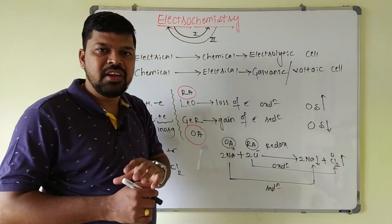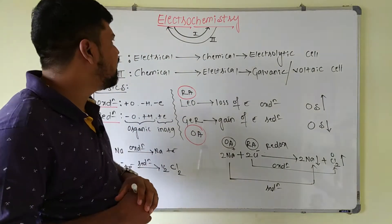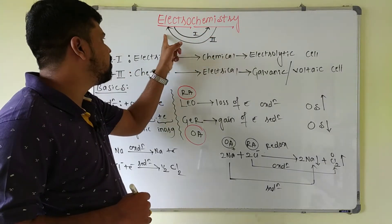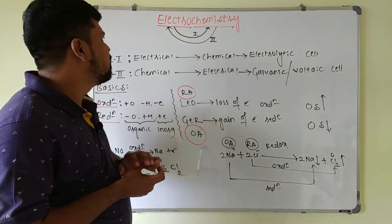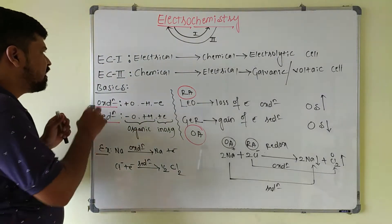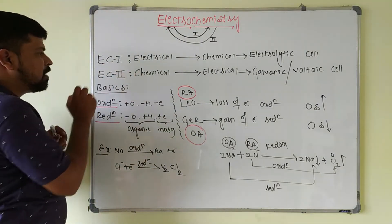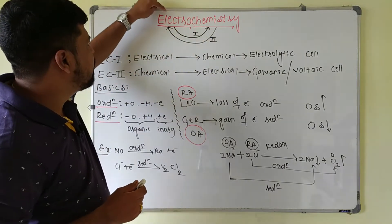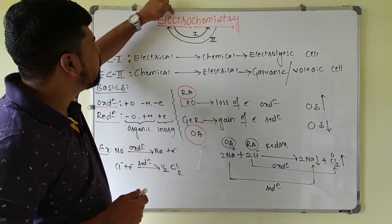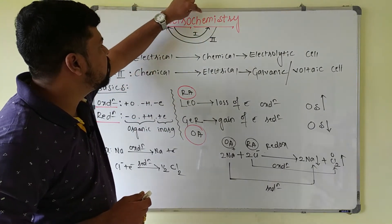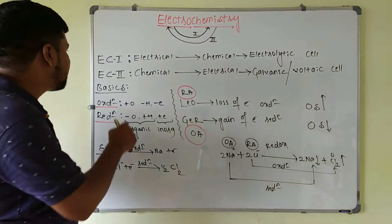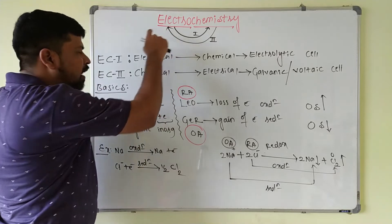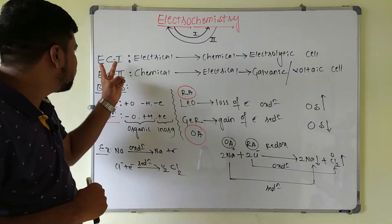Electrochemistry is the branch of chemistry which deals with the interconversion of electrical energy into chemical energy and chemical energy into electrical energy. I will split this heading into two parts: electrochemistry one and electrochemistry two. In electrochemistry one, we will discuss the conversion of electrical energy into chemical energy. In electrochemistry two, we will discuss the conversion of chemical energy into electrical energy.